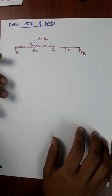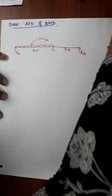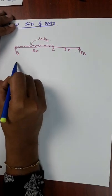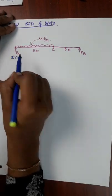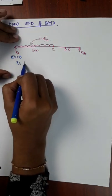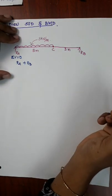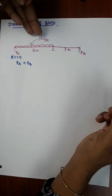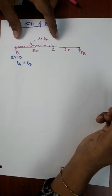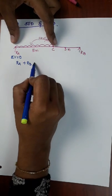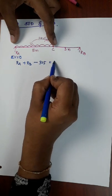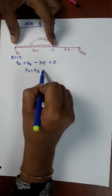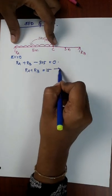The first step is to find the reaction at A and the reaction at B. The first equation is sigma V is equal to 0. RA and RB are in the upward direction. It is a uniformly distributed load: 1 meter is equal to 3 kN. At 5 meter distance, the total load will be 3 into 5, that is downward direction, which is equal to 0. Therefore, we get RA plus RB is equal to 15. This is equation number 1.